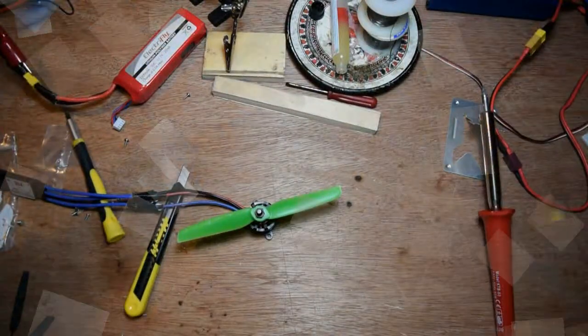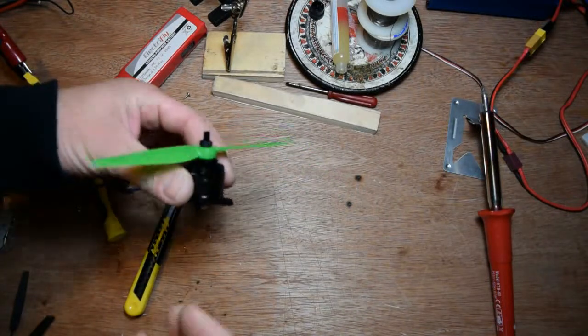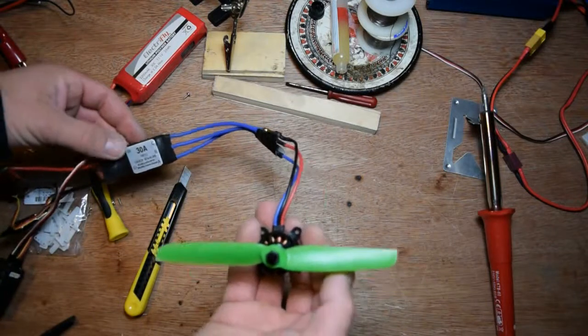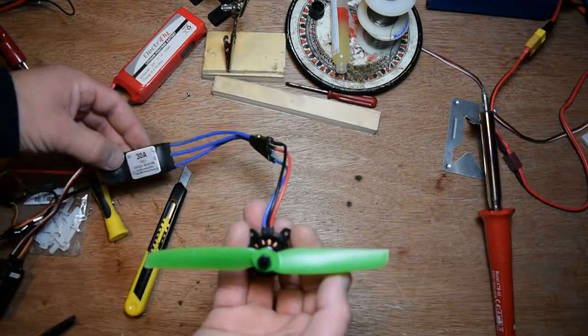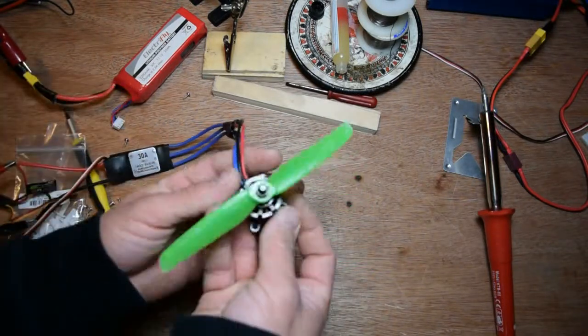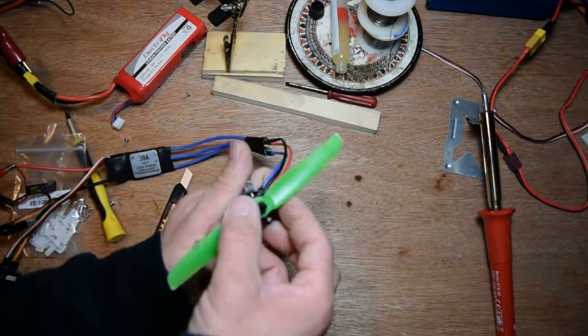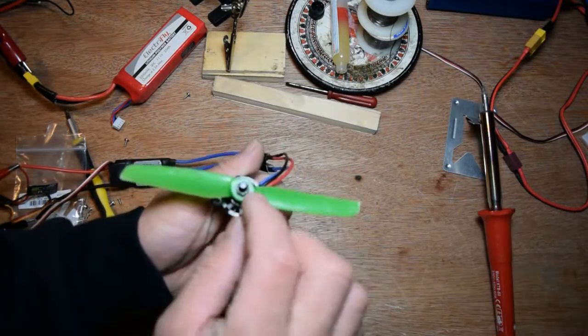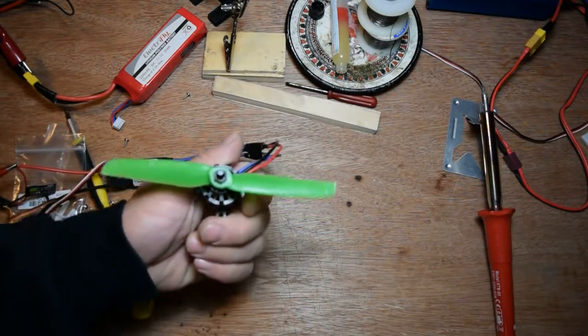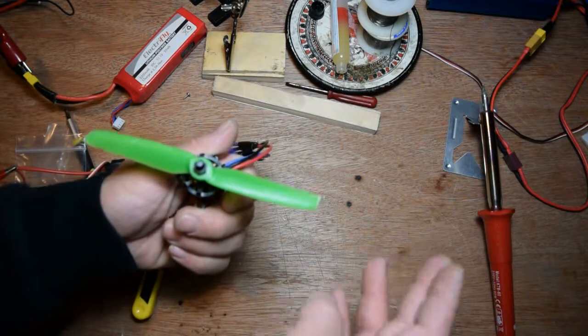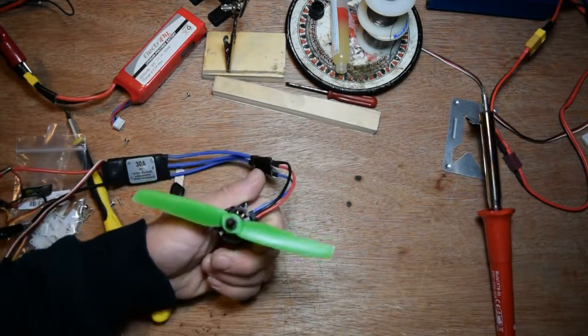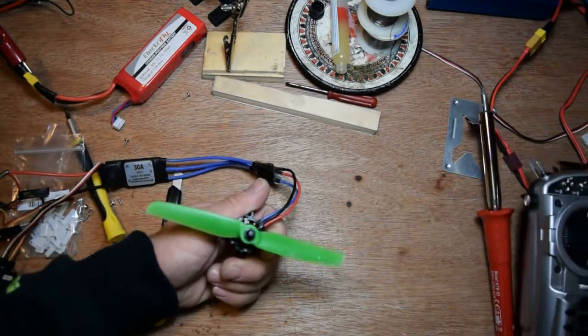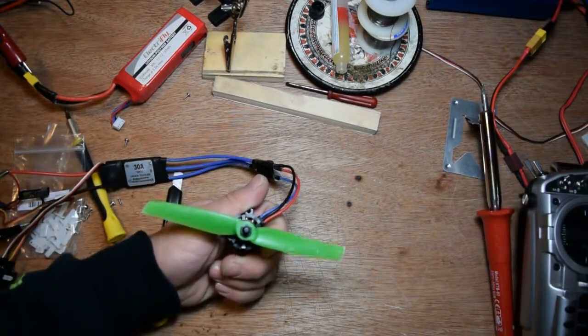So I put a prop and my ESC opto 30 amps, because this is gonna be on my wing. This is six and the pitch is three. I think I'm gonna buy an eight or ten prop for the wing, but for now I just have this, so the demonstration.